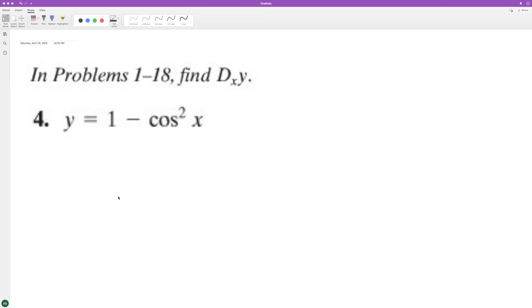The derivative of the following. So y prime is going to be equal to, working left to right, the derivative of a constant, any constant, in this case 1, is 0.